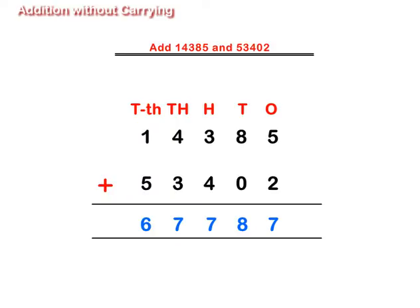Thus, on adding 14,385 and 53,402, we get 67,787.